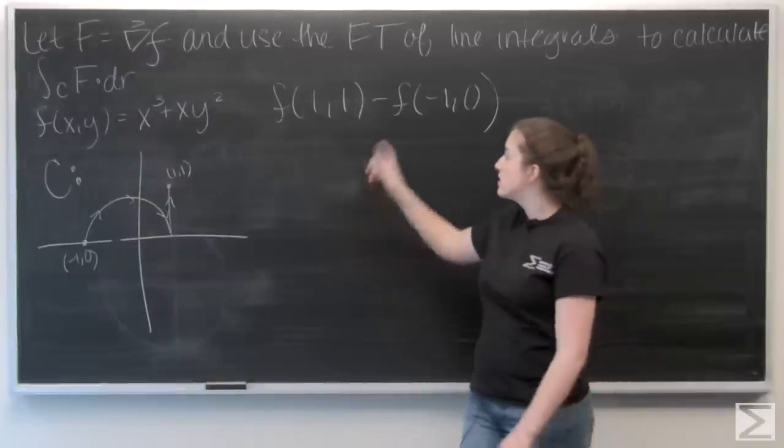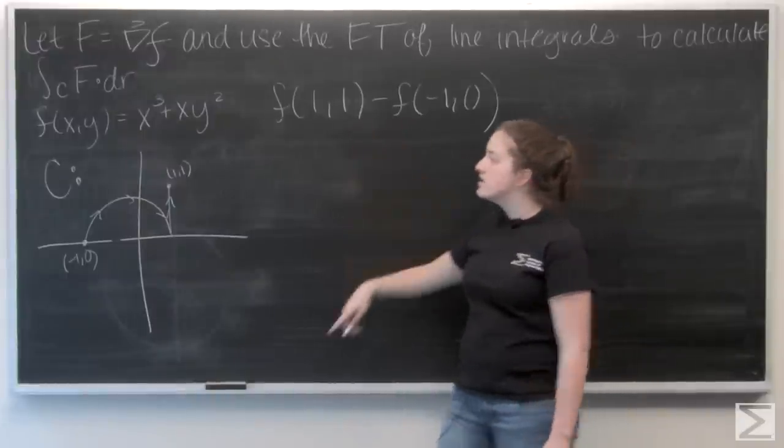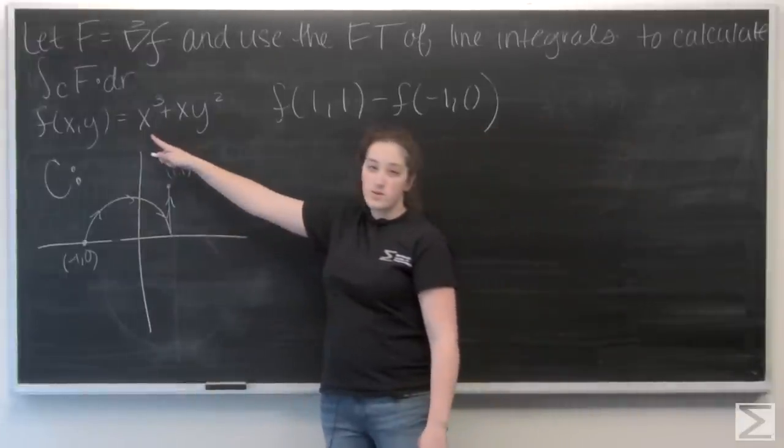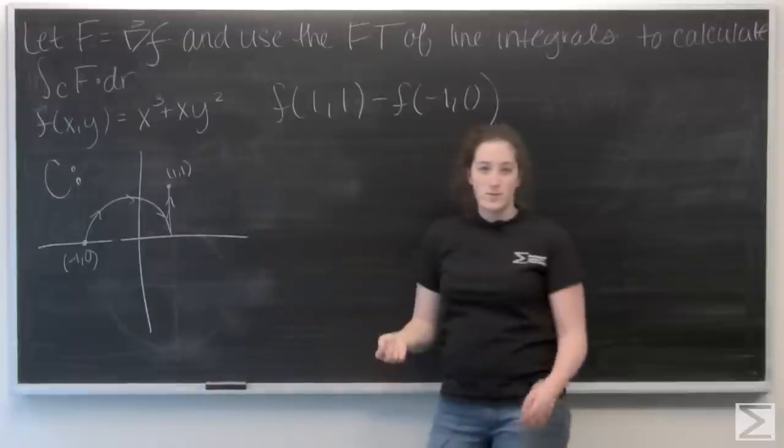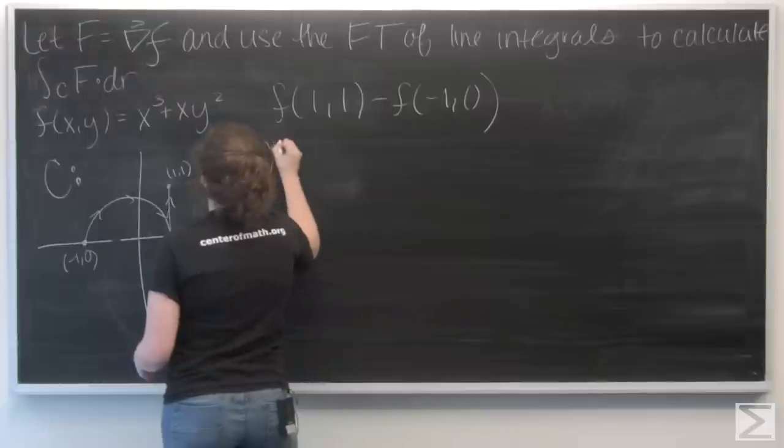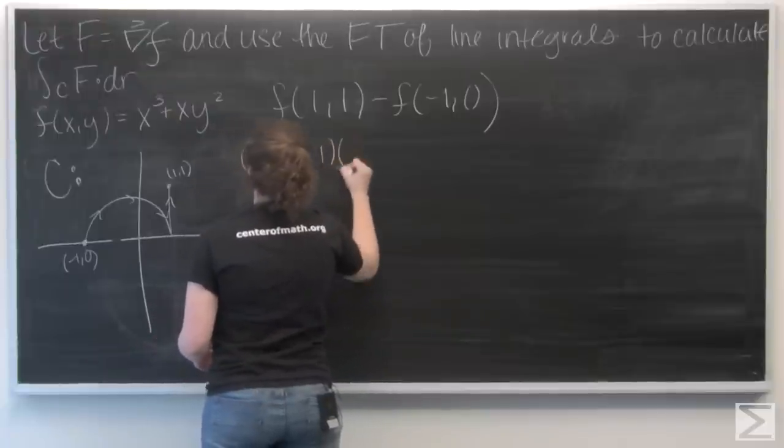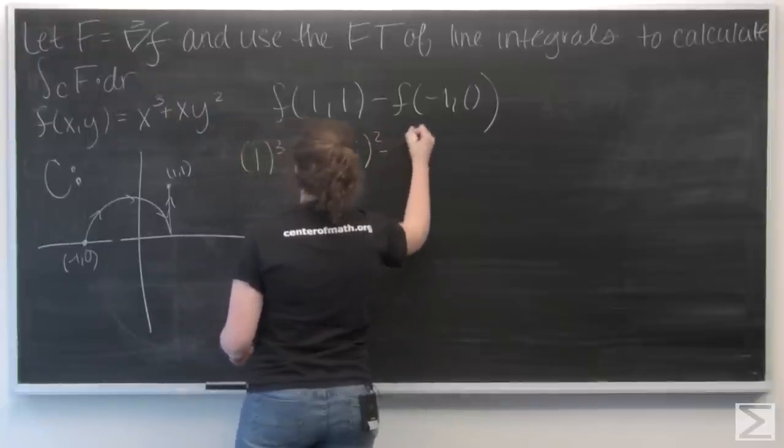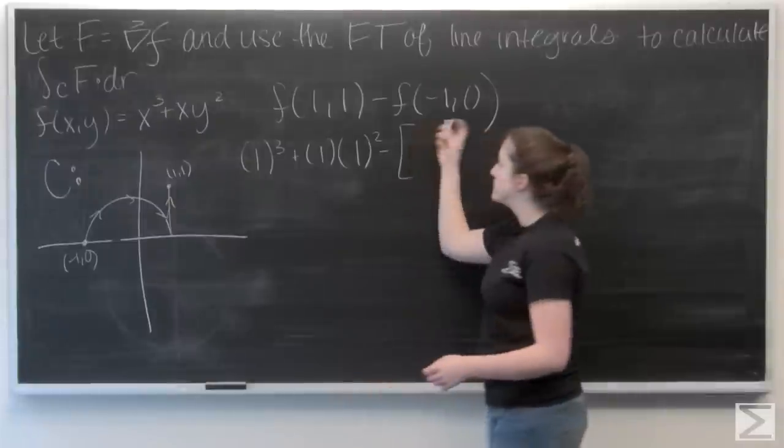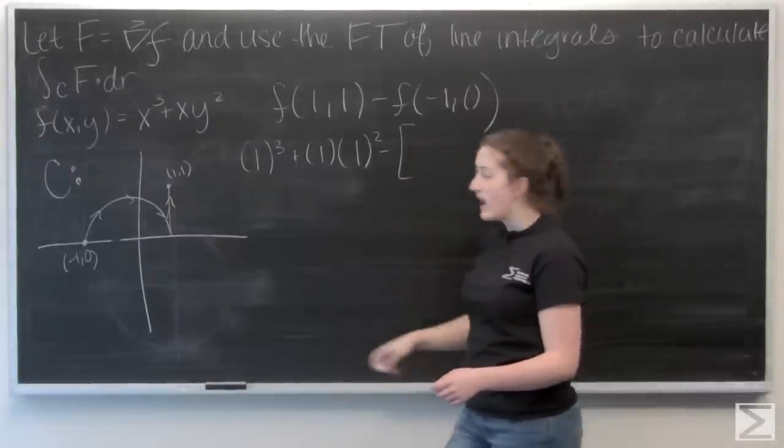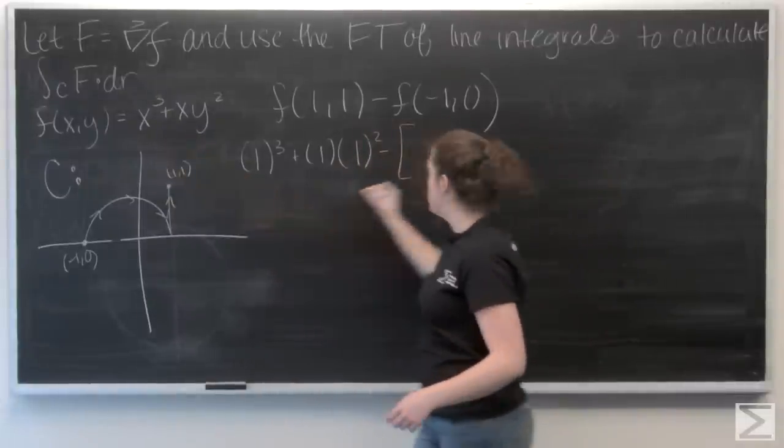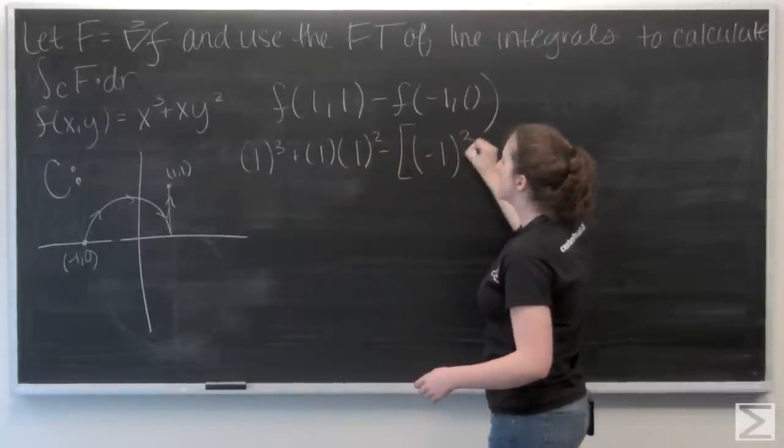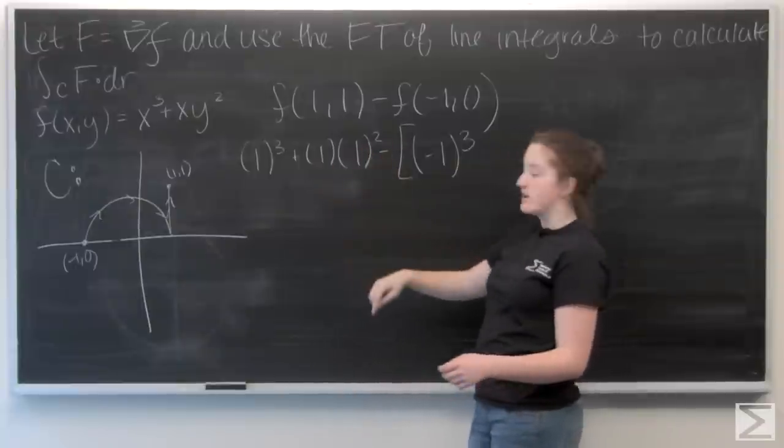So, for f of 1, 1, I'm going to have 1 cubed plus 1 times 1 squared. And then, for f of negative 1, 0, I'm going to have negative 1 cubed plus negative 1 times 0 squared.